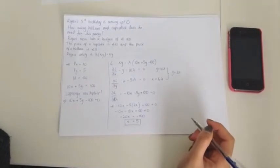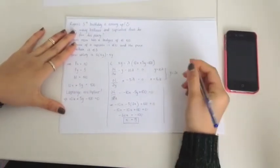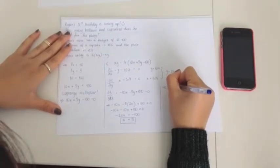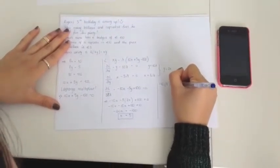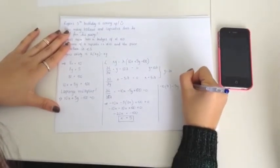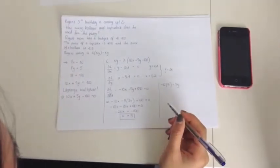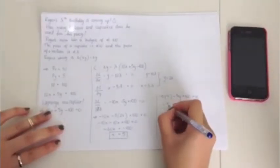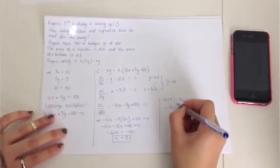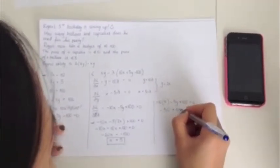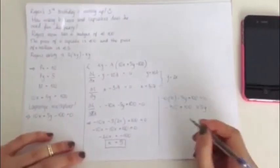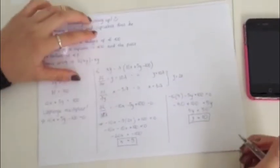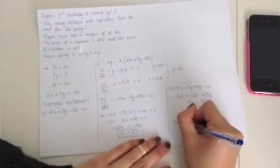And then if we plug that back into our original budget constraint, 10X plus 5Y equals 100, we get minus 10 times 5 minus 5Y plus 100 equals 0. So minus 50 minus 5Y plus 100 equals 0, which gives us 50 equals 5Y and therefore Y equals 10. So our optimal bundle in this situation is 5 of X and 10 of Y.